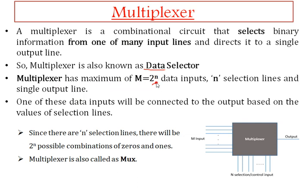In general, a multiplexer has 2 power n data input lines, n selection lines, and a single output line. This is a very important point — any type of multiplexer has only one output line. This is the block diagram of a multiplexer circuit having 2 power n input lines, n selection lines, and a single output line. Based on the input given to the selection lines, the multiplexer selects one input line and that line goes to the output.